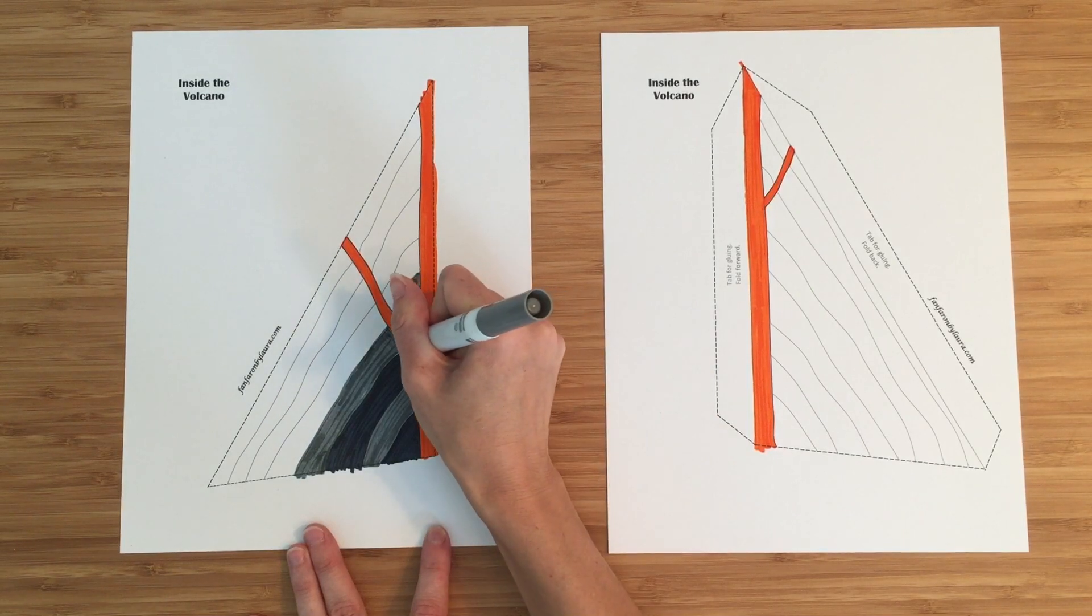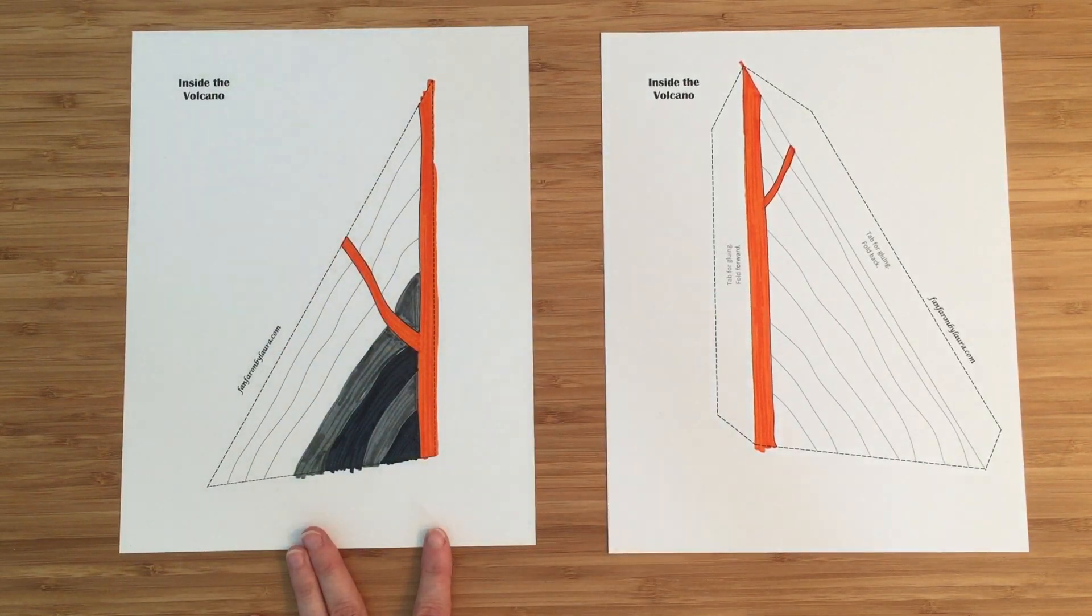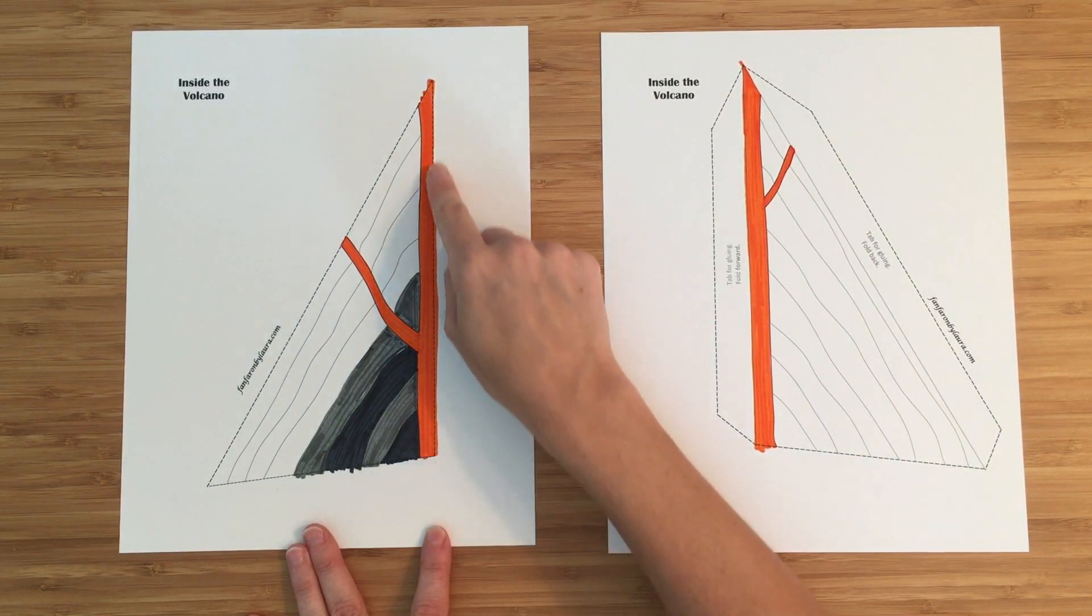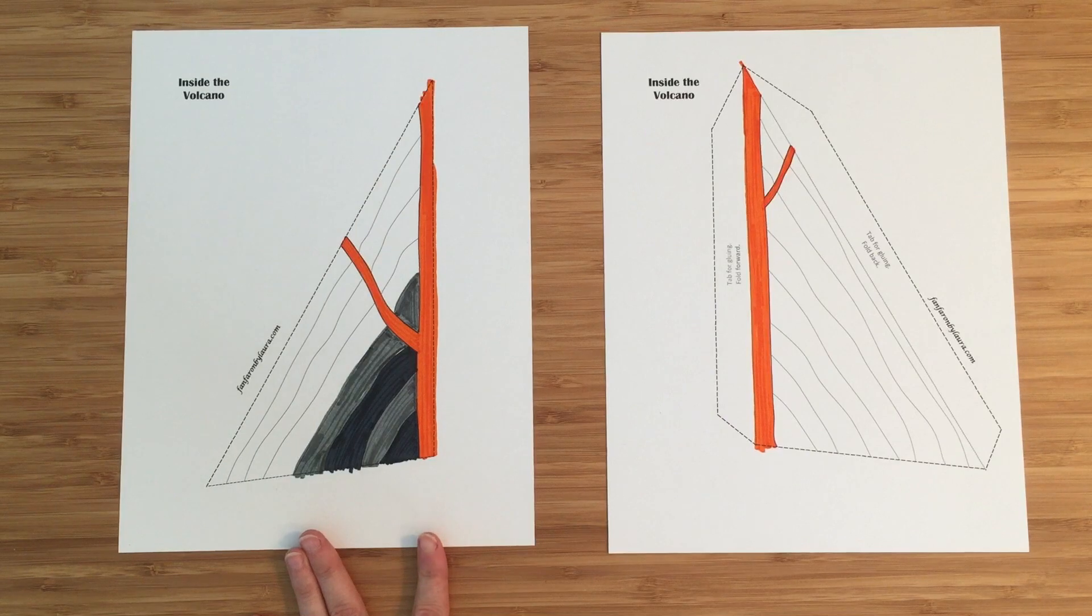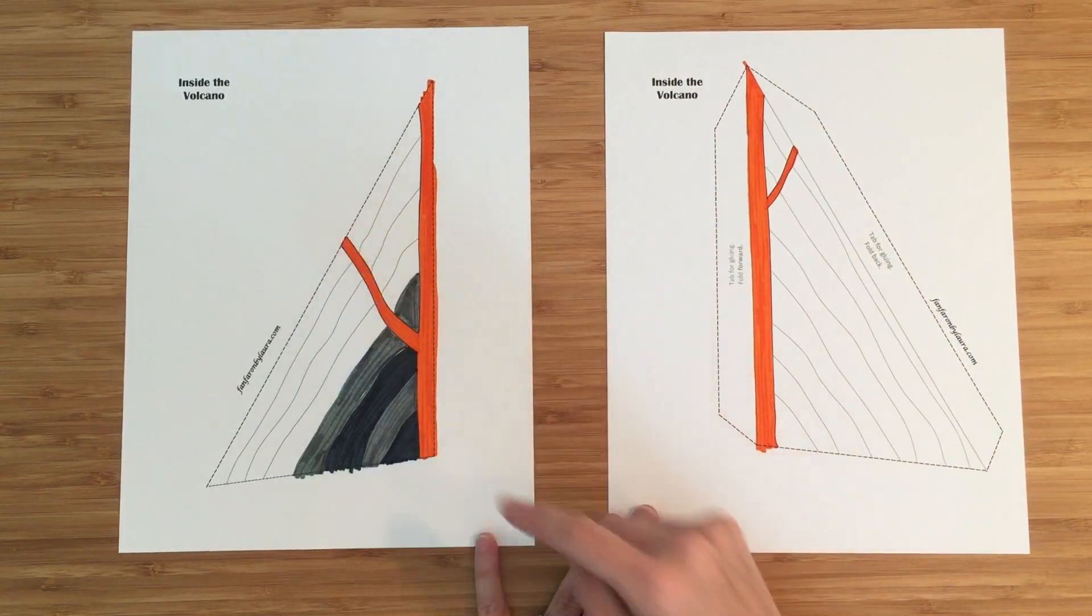So I'm coloring the layers inside the volcano black and gray. The orange that you see is the magma coming up through the volcano getting ready for that eruption. And it actually has some other side vents here that it can come out to.